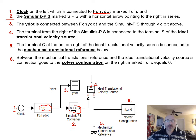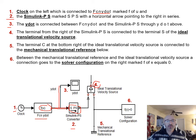The y-dot signal branches off and connects back through element three, the y-dot block, down to the Simulink-PS converter. Element four is the ideal translational velocity source; the terminal to the right of the SPS connects up to terminal S of that velocity source.